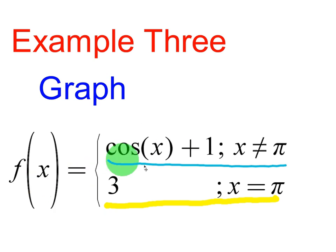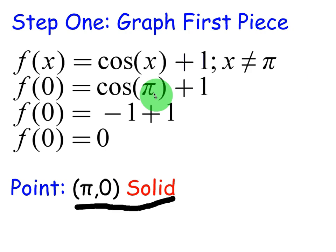f of x equals top piece cosine of x plus 1 whenever x is not equal to π. Bottom piece, f of x is equal to 3 whenever x is equal to π. So the question I have in my mind is, the top is going to give us a big graph except for at π, the bottom will tell us what the y value will be at π. Will this fill in the hole like it did in example 1? Let's see.